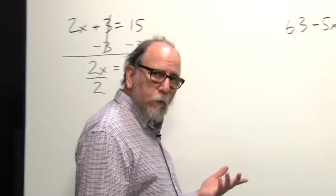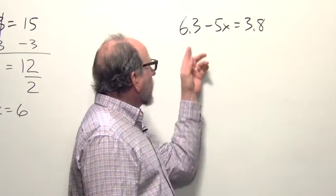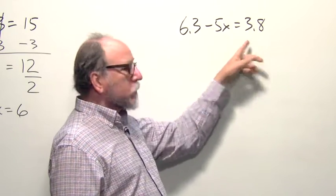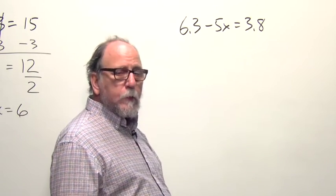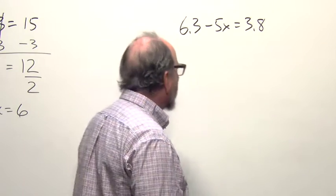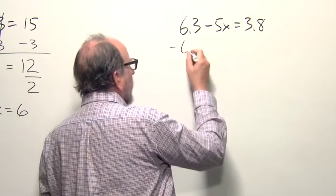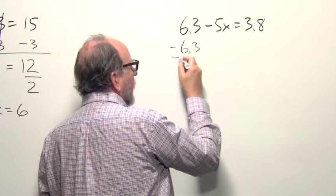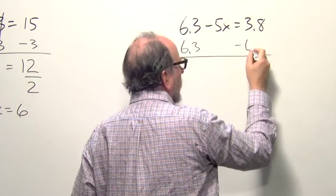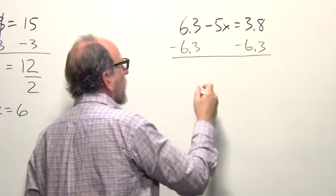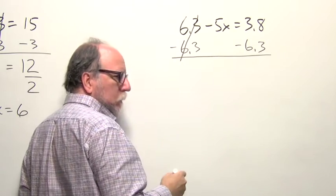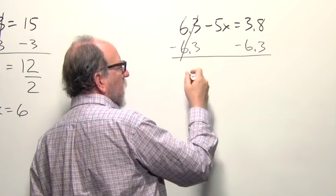Moving to a slightly more difficult example: 6.3 minus 5x equals 3.8. Again, we do the same things. We add negative 6.3, or subtract 6.3 from both sides. That would add to zero here and eliminate. We don't have to write the zero; it just gets in the way.